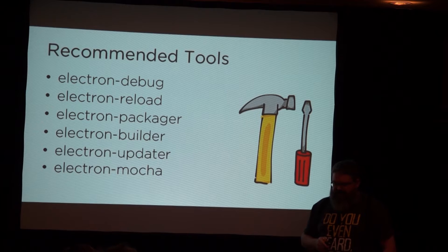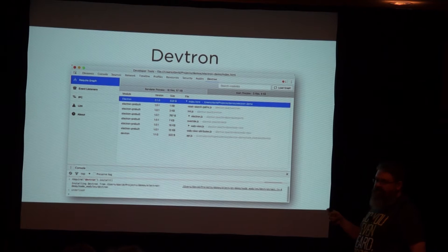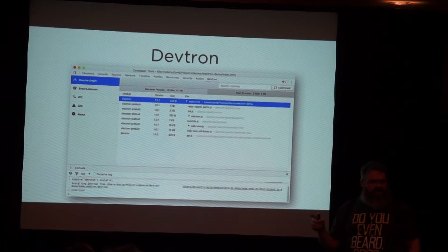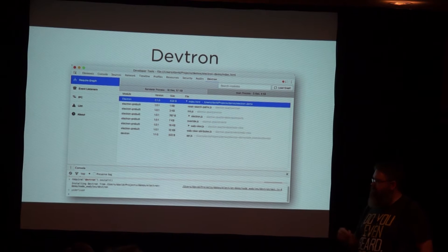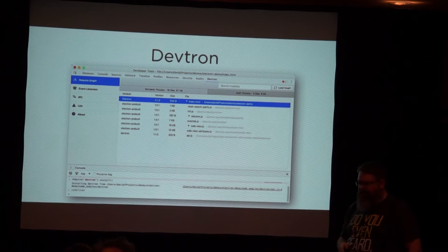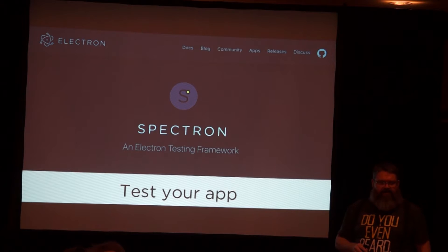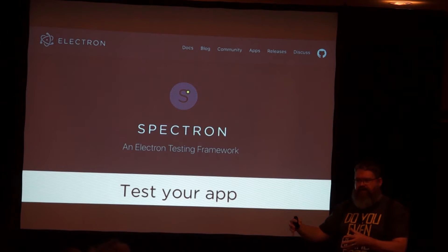There are a couple of new applications created by GitHub to support Electron development. One is called DevTron — this is what adds the additional tab to your Chrome DevTools. It gives you information about assets, monitors IPC communications so you can track messages between your renderers and the main process, and it's got a linter specifically for Electron that gives suggestions like 'you don't have an error handler for your application.' Then there's Spectron — I haven't used this yet but it looks really good. It's a testing framework kind of like WebDriver or Selenium that also puts the front end of your application under test.